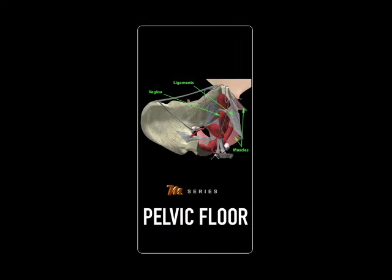Pelvic floor: The sexual education for a marriage cannot be completed without understanding the anatomy of the pelvic floor. The muscles, the ligaments, the zones with more sensitivity, and so many other aspects of sexual anatomy change through the normal aging process or for special events like childbirth.